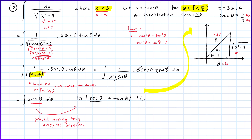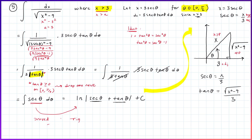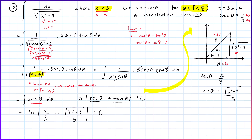We know sec(θ) = x/3 from how we defined x in the substitution. Using the triangle, tan(θ) = √(x² − 9) / 3. Substituting back, the answer becomes ln|sec(θ) + tan(θ)| + C = ln| x/3 + √(x² − 9)/3 | + C. That is the answer, written in terms of x using our reference triangle.